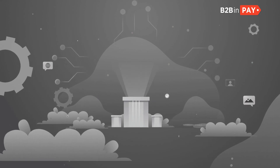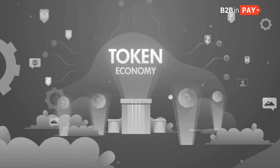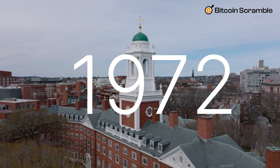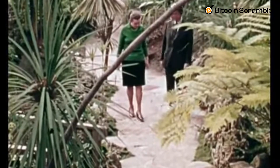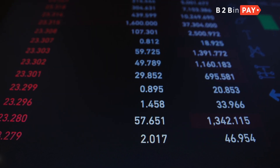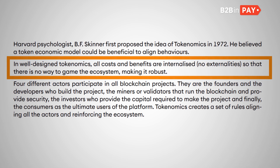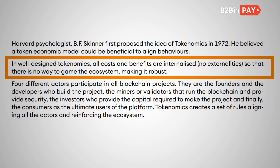The concept of tokenomics began to be used relatively recently. However, the idea of token economics was proposed back in 1972. It was suggested by Harvard psychologist BF Skinner. He was convinced that such a model was capable of controlling behaviour. Giving a specific unit a value would cause it to stimulate the performance of certain actions.